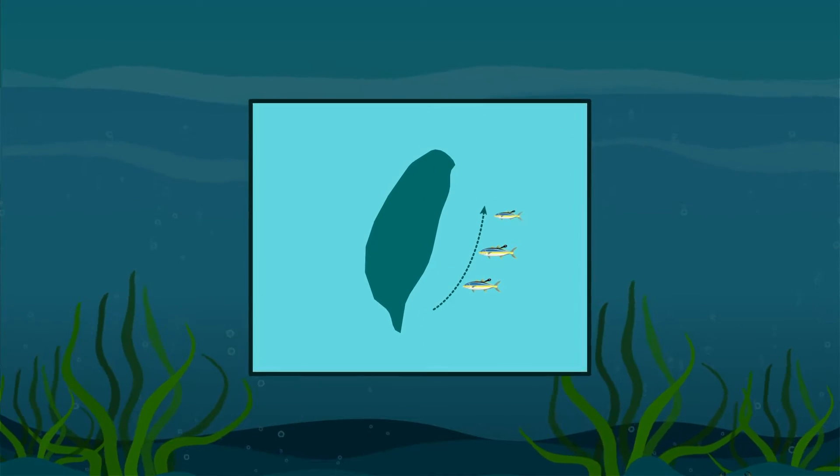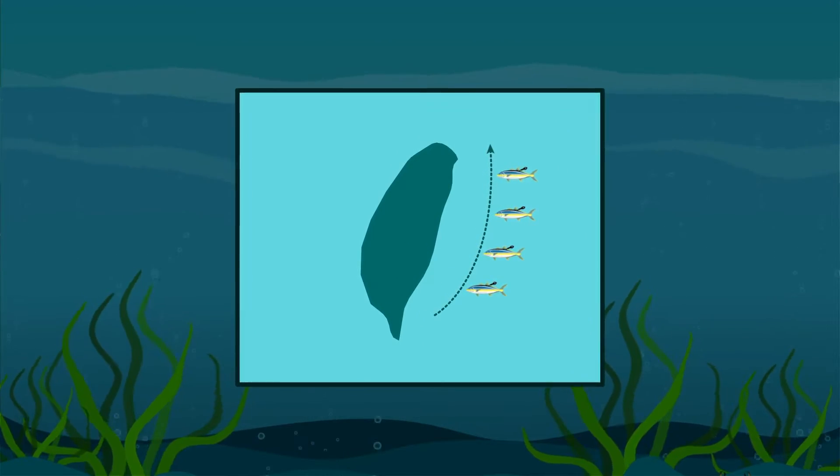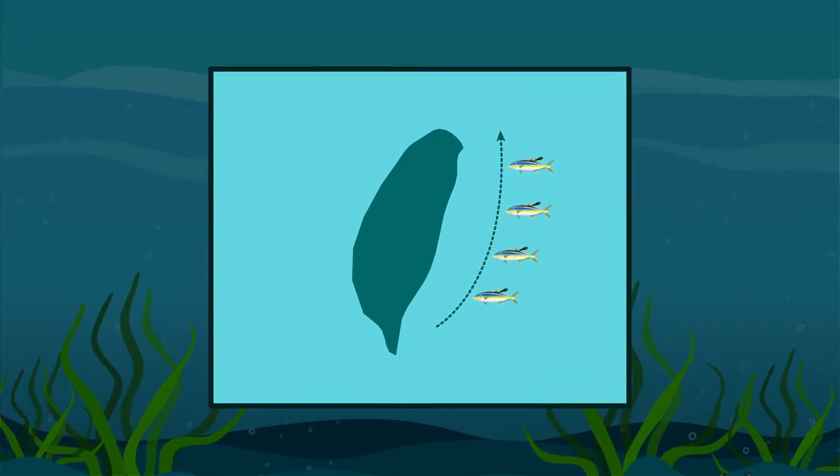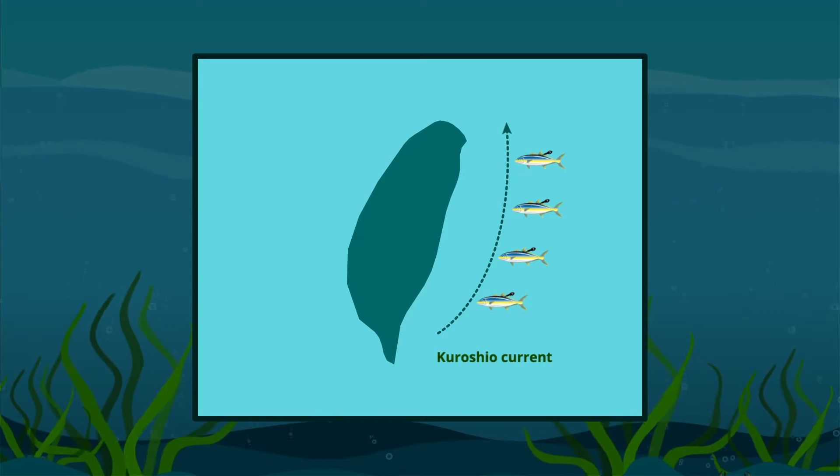They also saw that fish moving north during the non-spawning period aggregated at the southern tip of the East China Sea and then relocated into the Kuroshio current, offshore and further south.